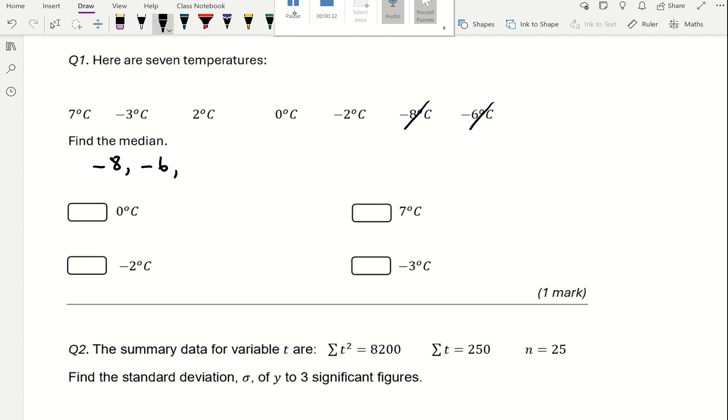The smallest number is negative 8, then we have negative 6, then negative 3, then negative 2, then 0, then 2, and then 7.